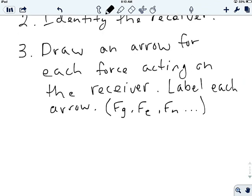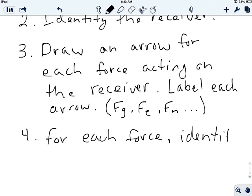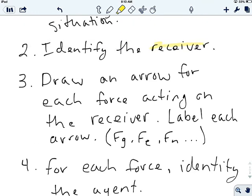Now the fourth and final step that you're going to do is that for each force, you're going to identify the agent. So we learned yesterday that for every single force, there's a receiver and there's an agent. Okay, so you've already identified the receiver.